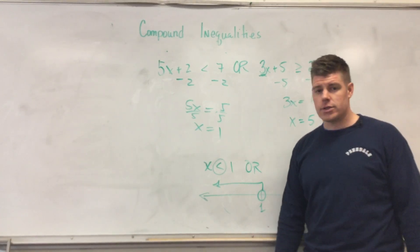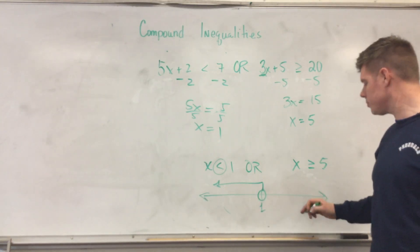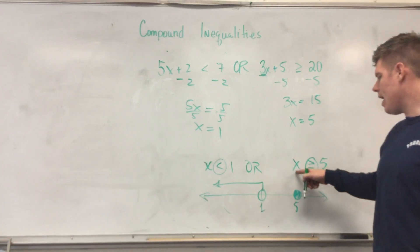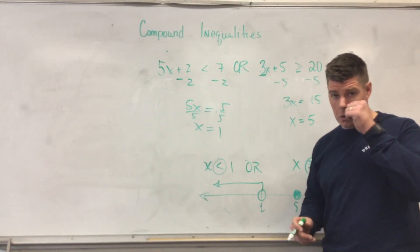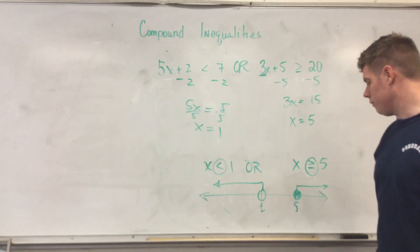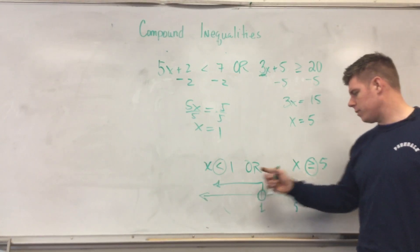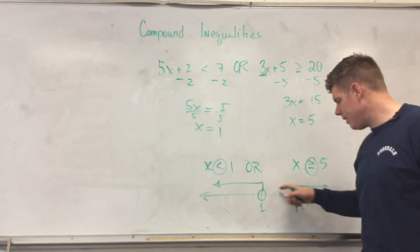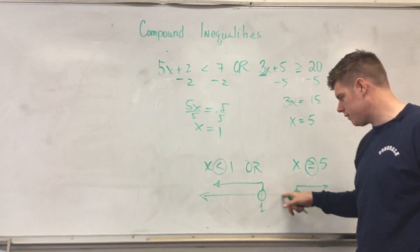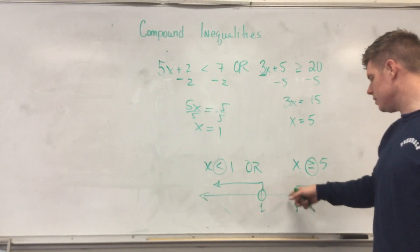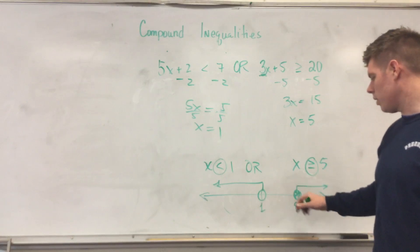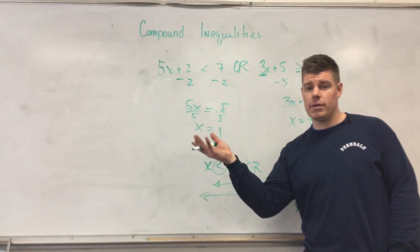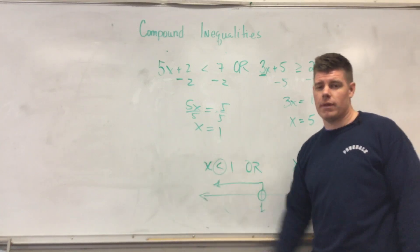Then place the second boundary at 5 with a closed circle since it's greater than or equal to, and shade everything to the right. The only region that doesn't work is between 1 and 5 — for example, 3 is not less than 1 and not greater than 5, so it fails both inequalities. With 'or,' you just need at least one thing that works.